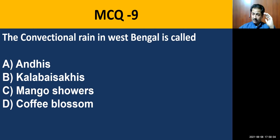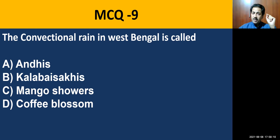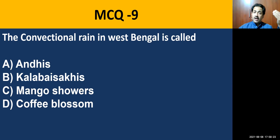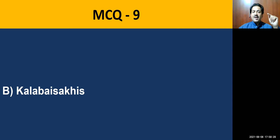MCQ question number nine: the conventional rain in West Bengal is called? All the pre-monsoon showers in summer are important to know — for example, Karnataka has coffee blossoms, Kerala has mango showers, and in West Bengal, yes, it is Kala Baisaki.